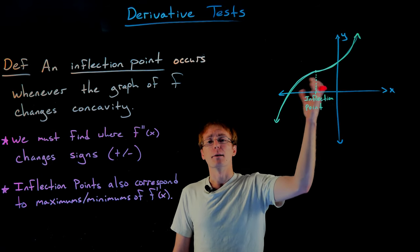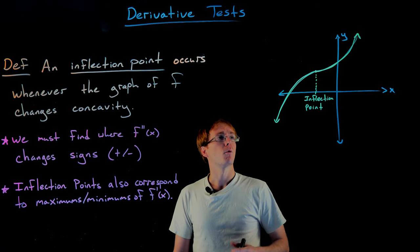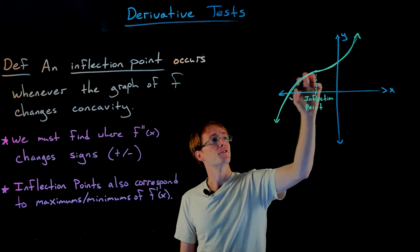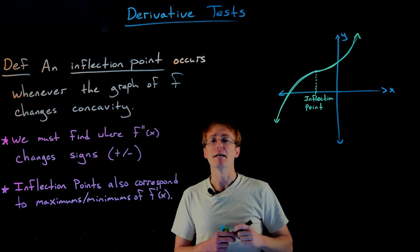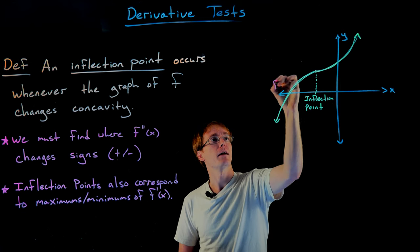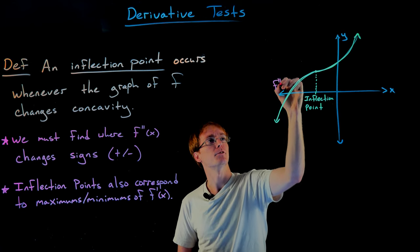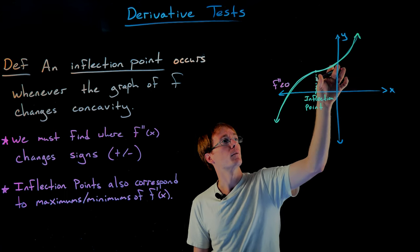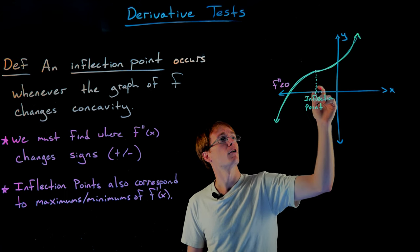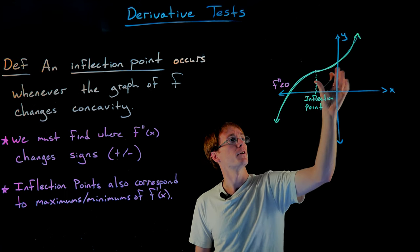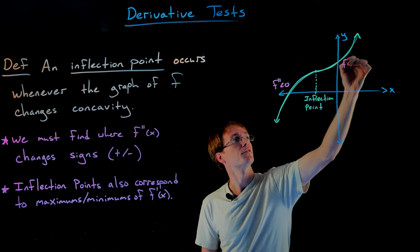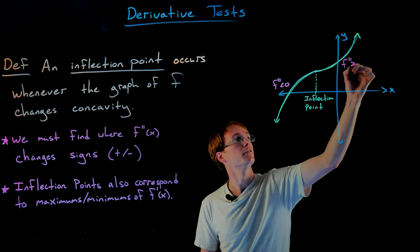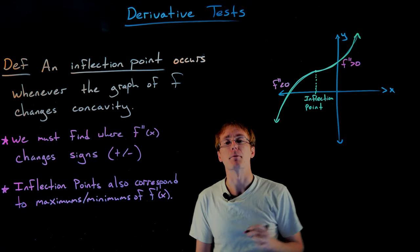Here we have an example of our inflection point. To the left of our inflection point we can see our graph is bent down, so it is concave down — that means the second derivative is negative. And to the right of our inflection point we are concave up, so the second derivative has to be positive.